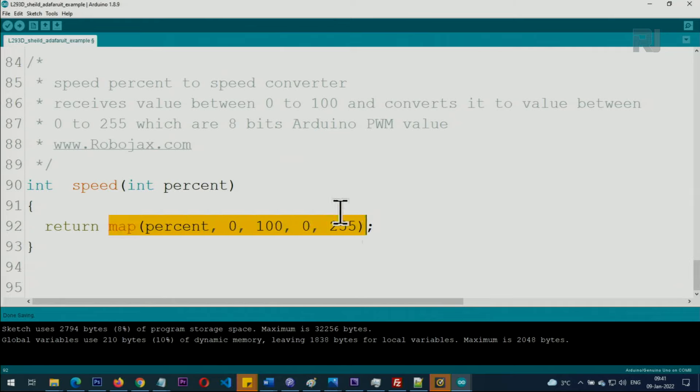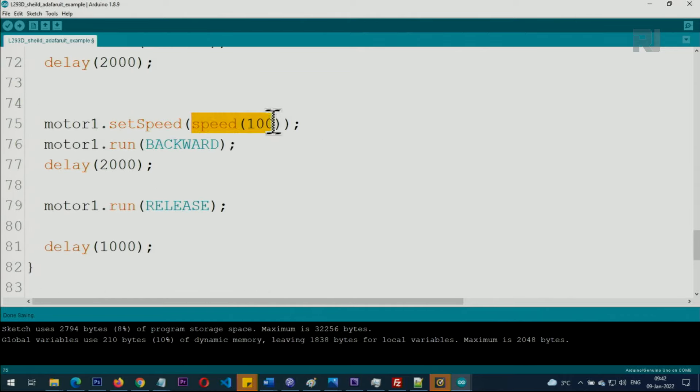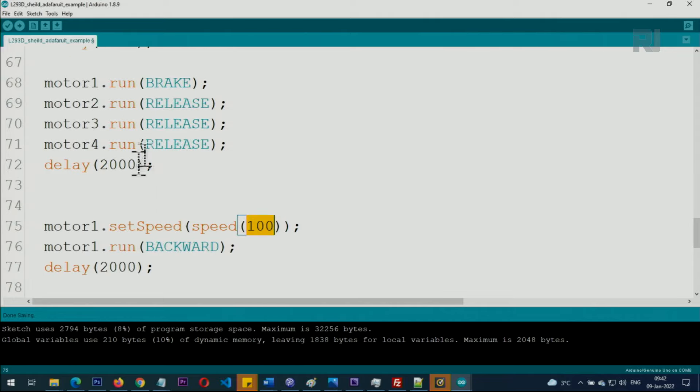And the result of this calculation will be returned back. When we say return, it fills up this area with a proper value. So that's it. That's taking care of the value, so you don't worry about 255 or anything. Just enter in terms of percent so you know the exact speed. And once you set everything, just click to upload your code.